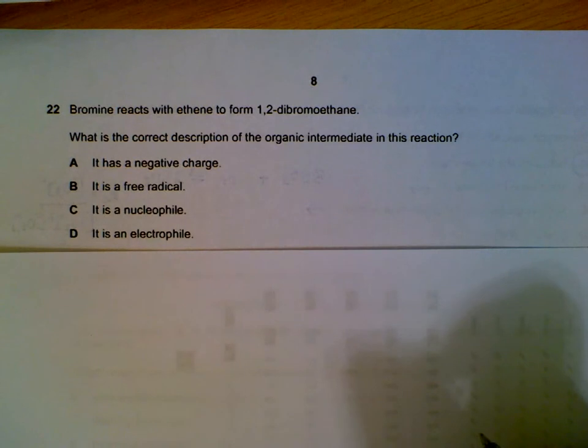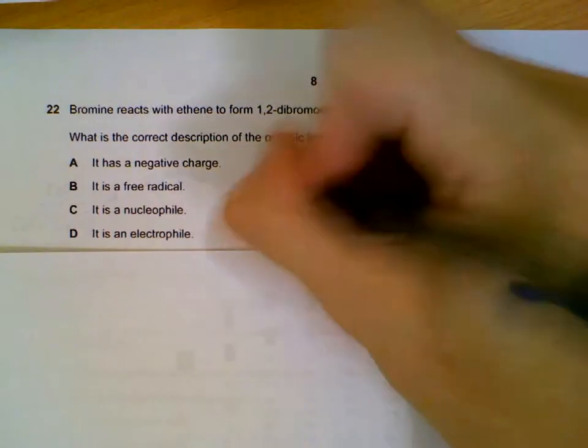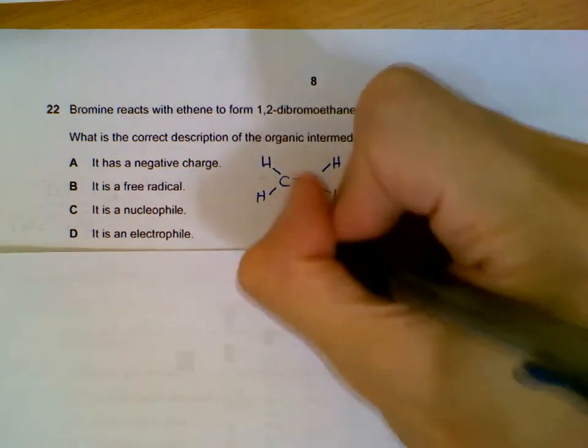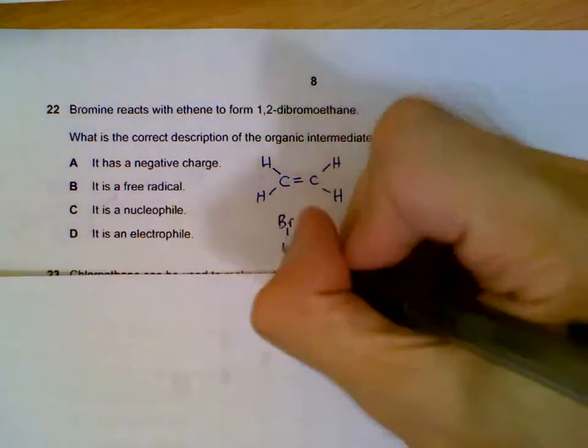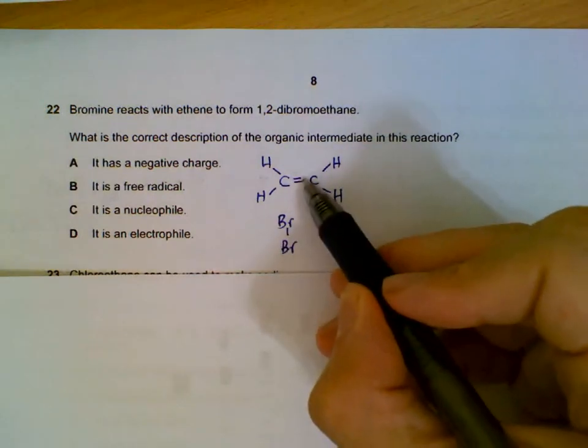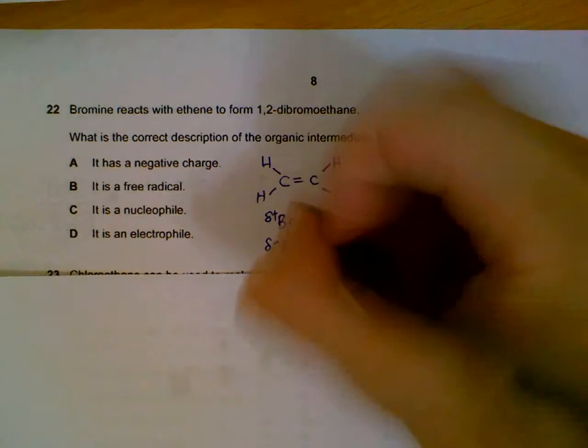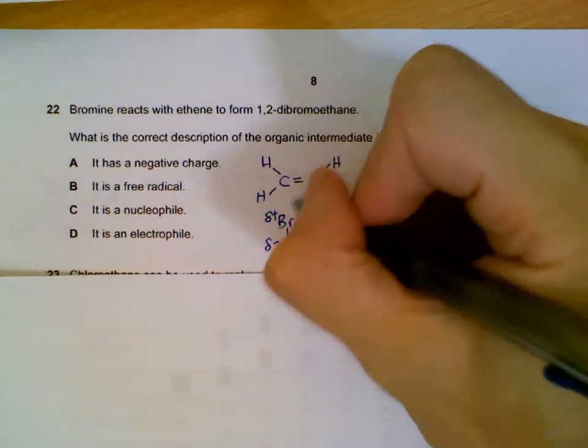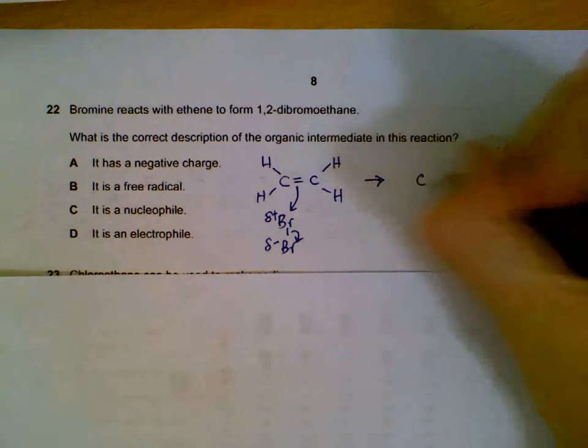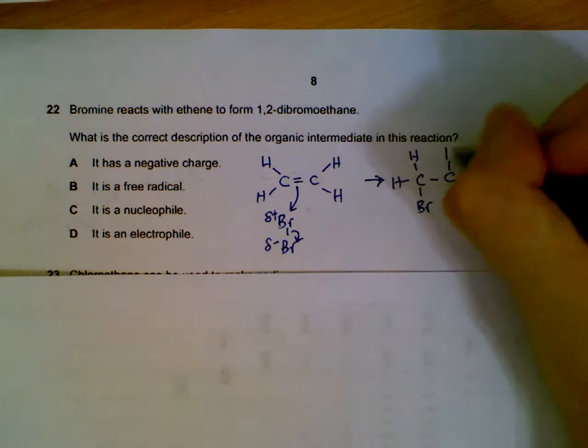So the description of the organic intermediate. We start off with ethene and our bromine molecule. This is a region where there are electrons, so it will attract an electrophile. We have a partial positive on bromine and a negative here. Just a recap on the mechanisms: the bond will form and the bond will break. Eventually, the intermediate will have the new bond between C and Br.